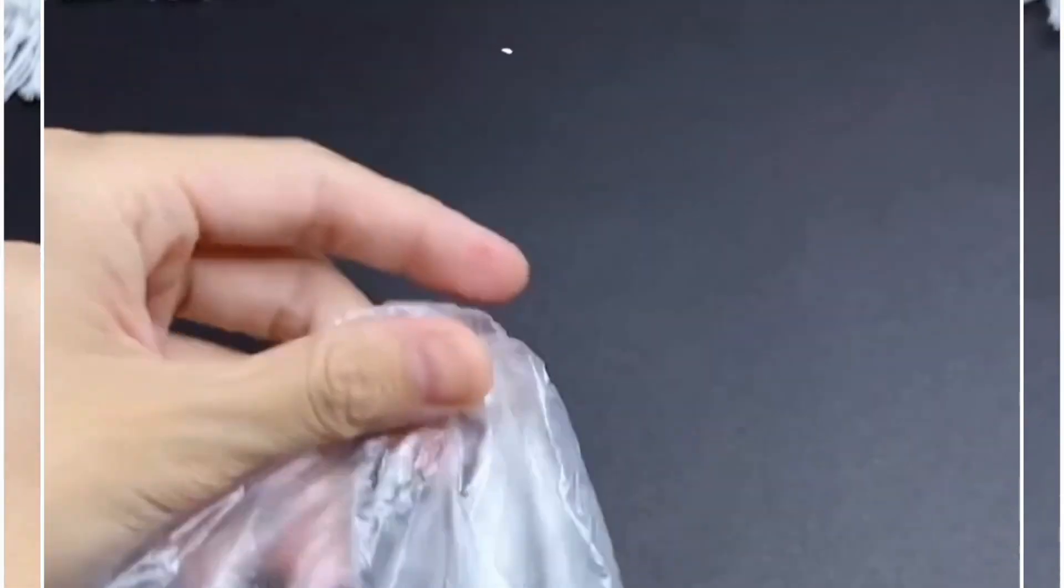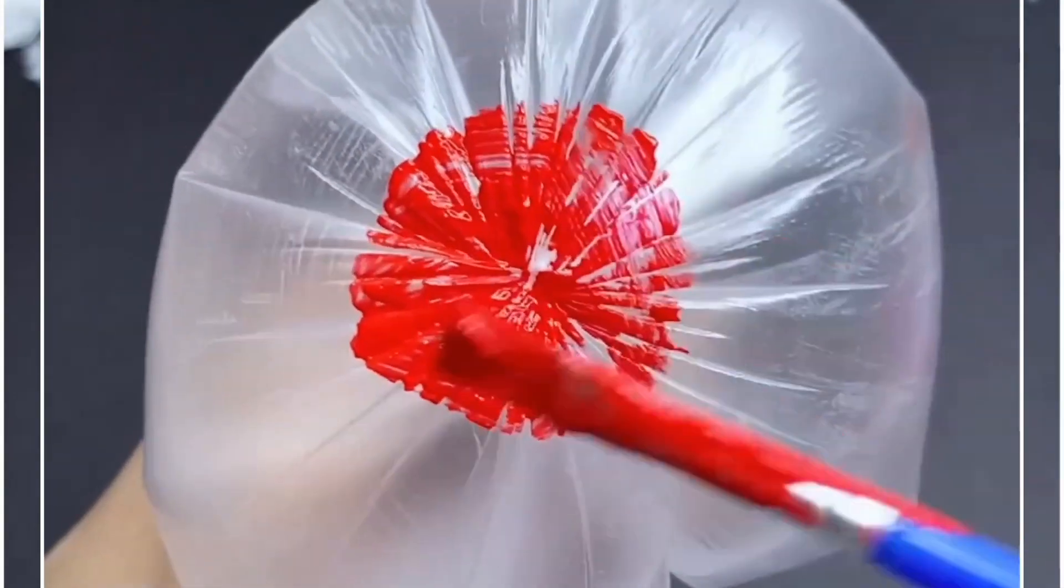Let's make an easy greeting card for Mother's Day. Take this transparent polythene, tie a knot on one side, blow it, and put this red paint. We're going to stamp the flower shape on this white sheet of paper.